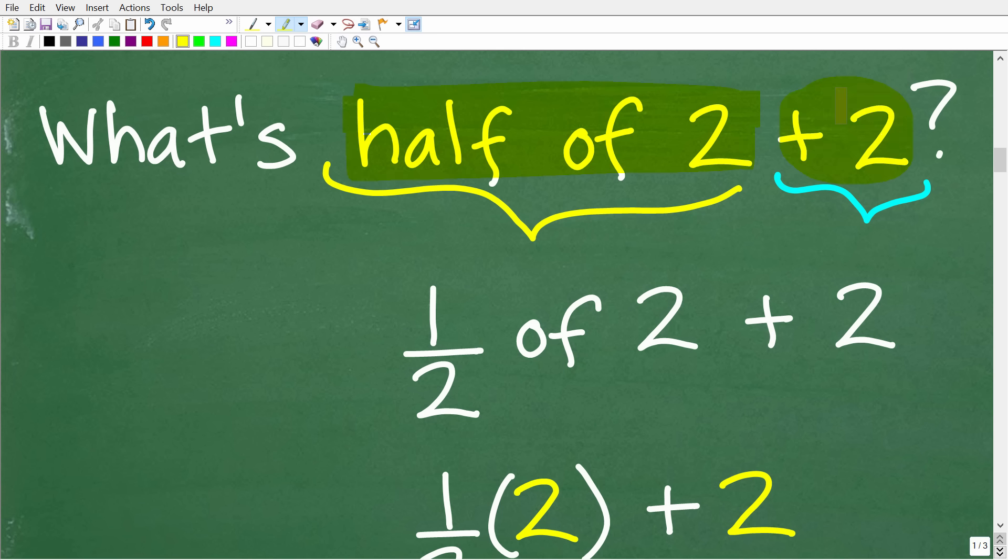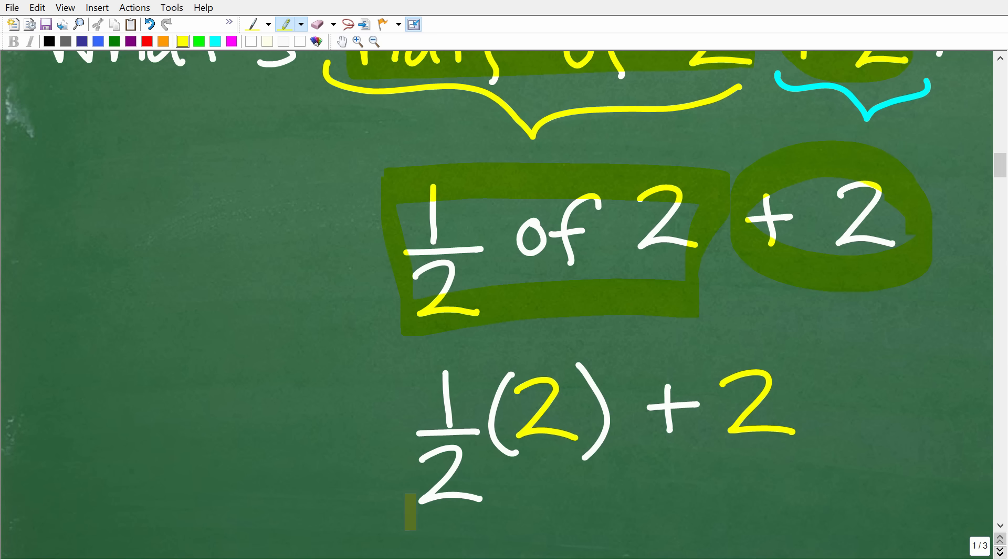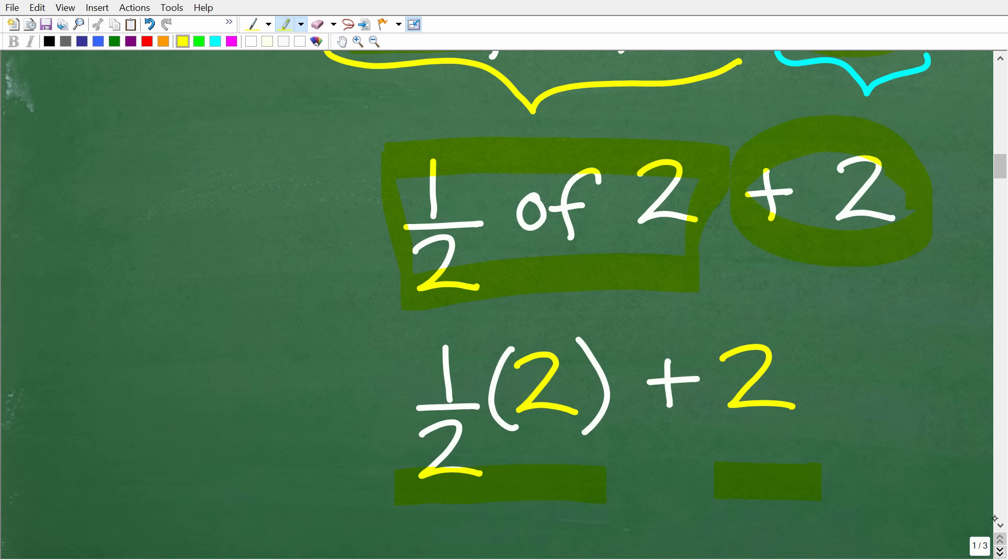Okay, so this is the way we need to interpret this problem mathematically. What's half of 2 plus 2? So what is one half of 2? So one half of 2 is what? Well, most of you know that the answer is 1, but we're going to keep translating this sentence until we get to a mathematical expression. So what's half of 2 plus 2? Well, this is one half of 2 plus 2. One half of 2 is the same thing as one half times 2 plus 2. So got to be very, very careful here.